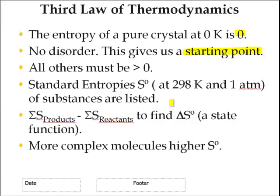So everything else from that starting point has to be greater than zero. So when we look at that, don't want to forget this, standard entropies, that's what that little zero sign is, 298K, one atmosphere.